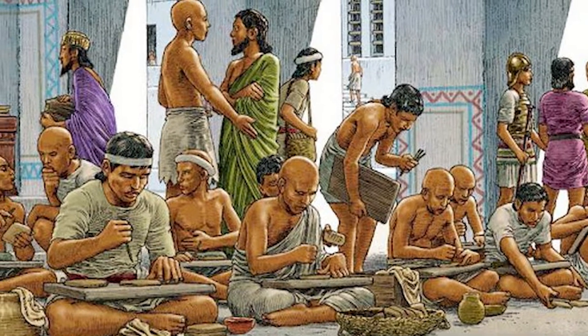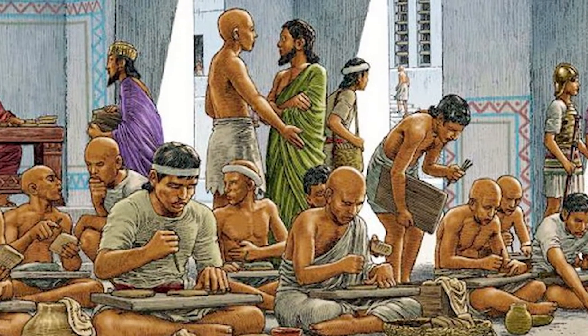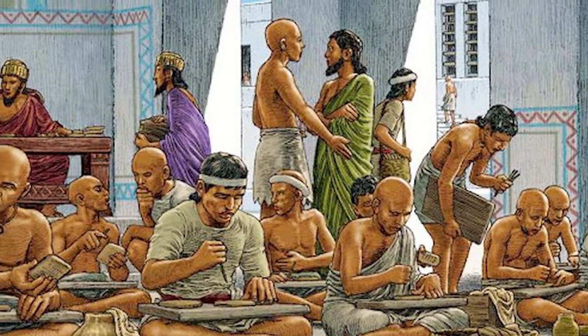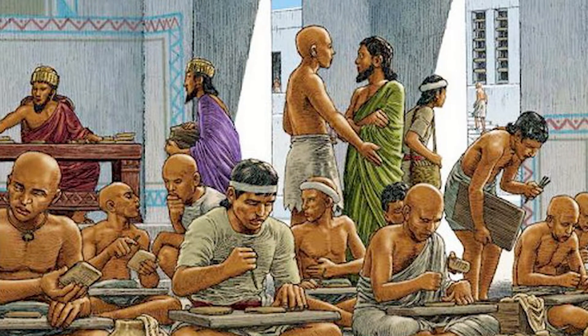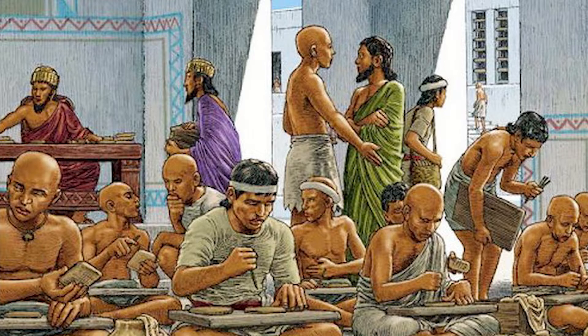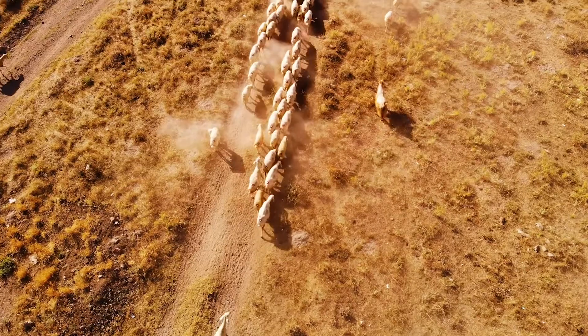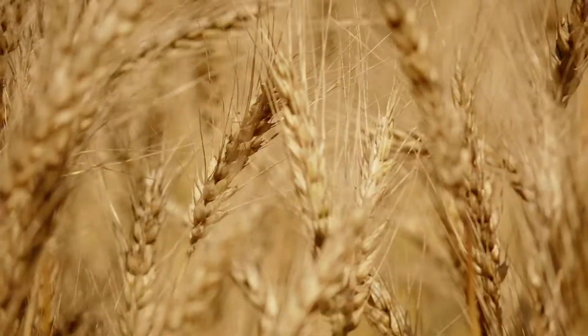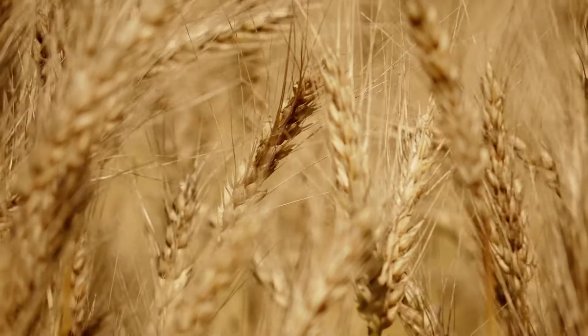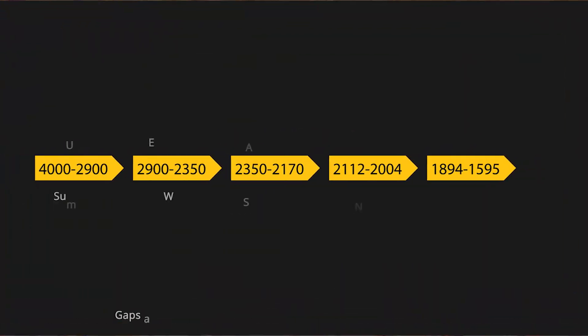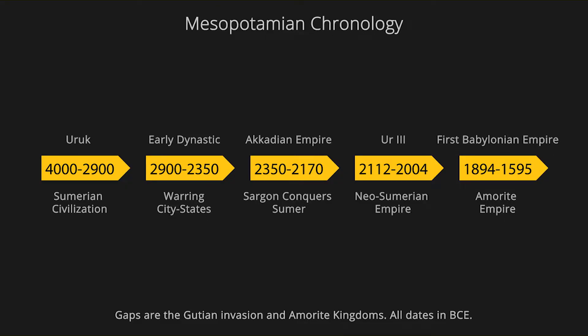Once writing developed, it was usually used to record administrative transactions and the movements of goods and their quantities. To track this, Sumerians developed different notations dependent on the goods — there was a symbol to record the number of sheep, and a different one for an amount of grain. Writing evolved over the next thousand years, and by 2000 BCE, during the Neo-Sumerian Empire, a standardized system was in place all over the kingdom, which spanned Mesopotamia, and this continued into the Old Babylonian period.